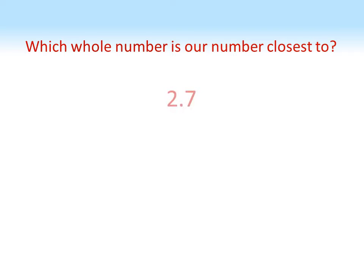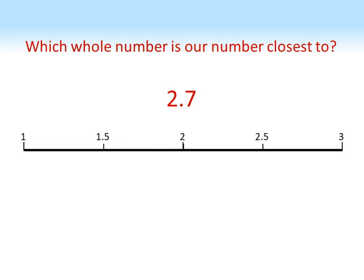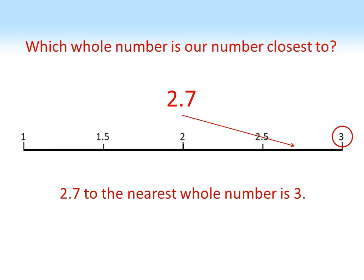So for example if we've got the number 2.7, if we look at this on a number line, 2.7 would be here just after the 2.5, so it's between 2 and 3 but it's obviously closer to 3. So if we're rounding to the nearest whole number we round to 3.